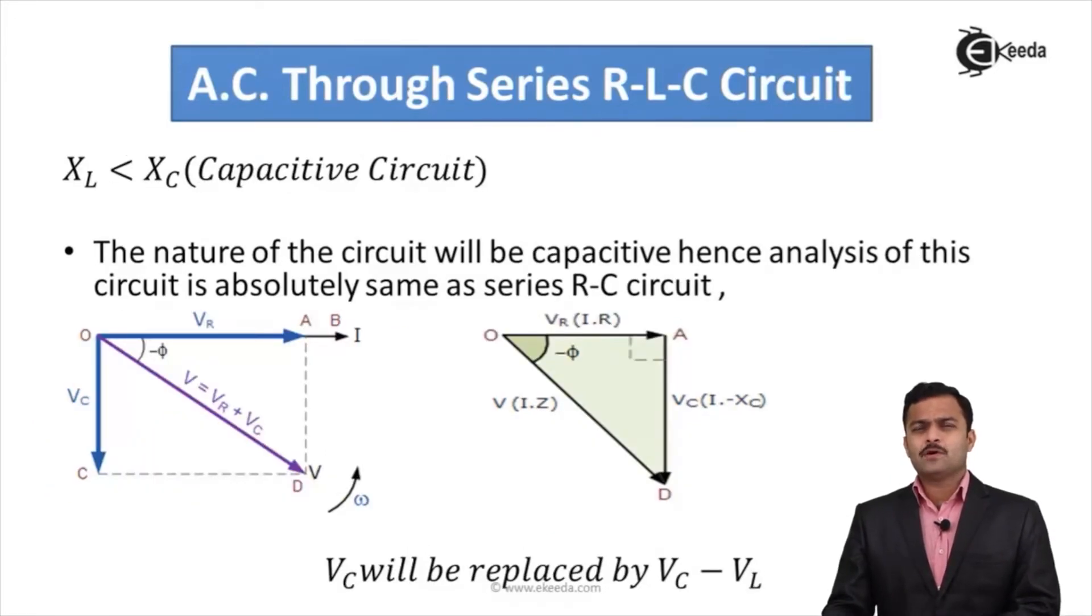Second case is suppose xc is greater than xl. Obviously, Vc will be greater than Vl, so the nature of circuit will be capacitive.